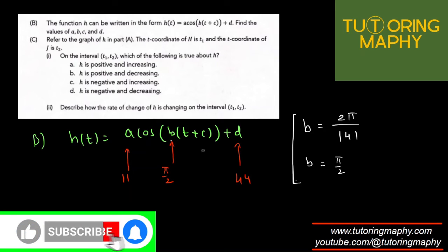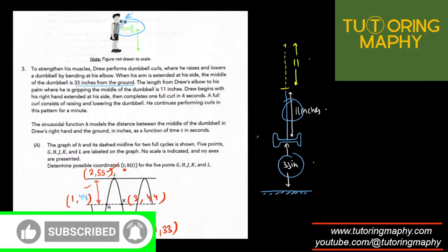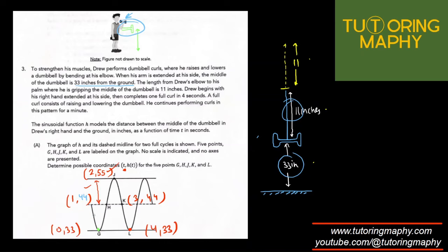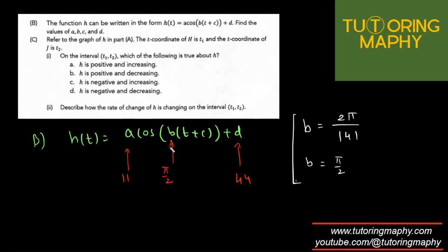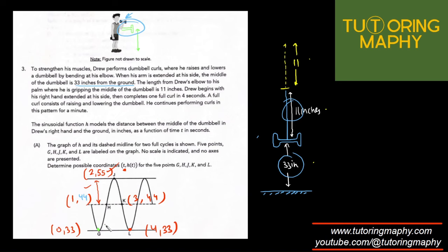C is the horizontal shift. Looking at the point (1, 44), and since this is a cosine function, cosine should have started with the maxima. In a way, the maxima has been shifted by two units to the right. Shifting to the right means a minus, so c will be negative 2.